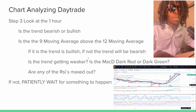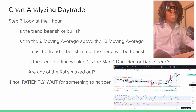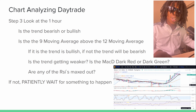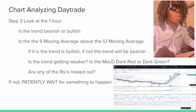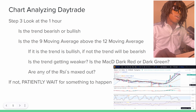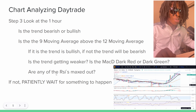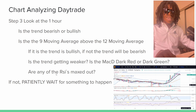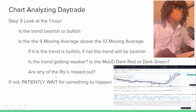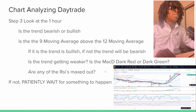Now look at the one-hour chart. Is the trend bearish or bullish? Is the 50 moving average above the 12 moving average? If yes, the trend is bullish; if not, it's bearish. Is there a crossover? Is the trend getting weaker? Is the MACD dark red or dark green? These are questions you have to ask yourself before you enter the trade — otherwise you could lose five thousand dollars like me. If the indicators aren't confirming, patiently wait for something to happen.